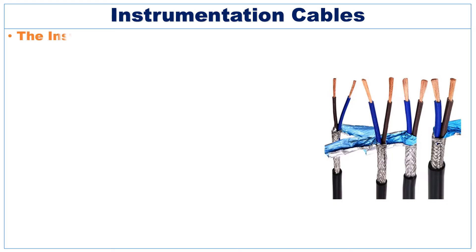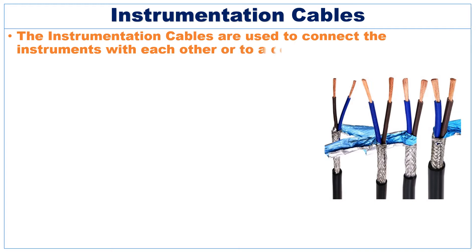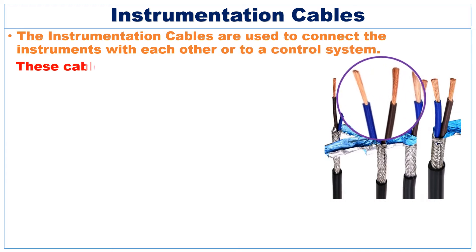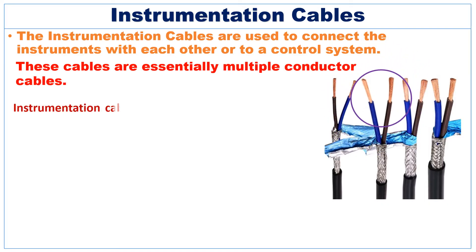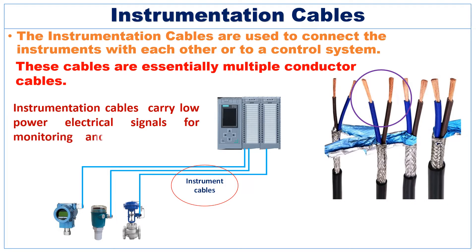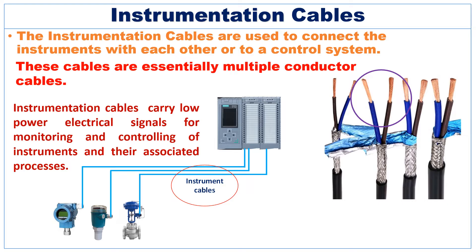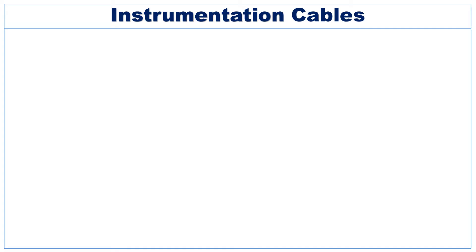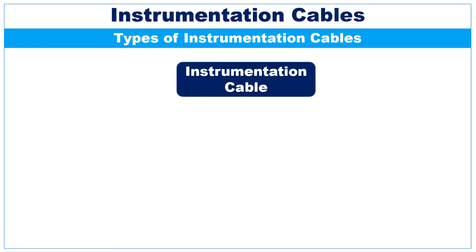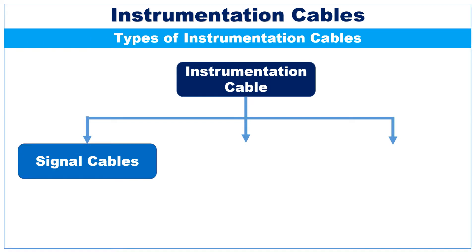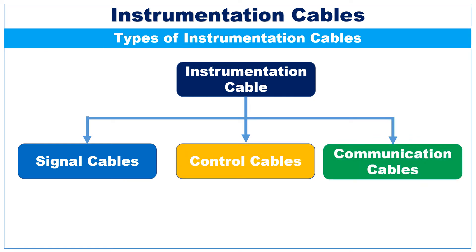The instrumentation cables are used to connect the instruments with each other or to a control system. These cables are essentially multiple conductor cables that carry low power electrical signals for monitoring and controlling of instruments and their associated processes. Instrumentation cables can be categorized into three categories: signal cables, control cables, and communication cables.